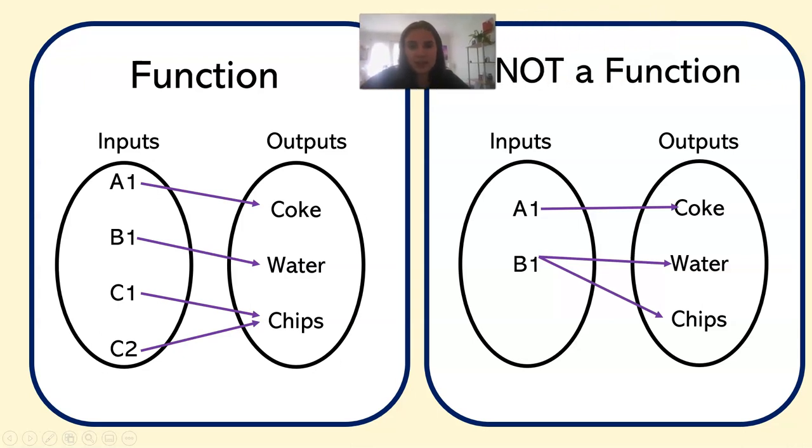So here is just the two types put together. Function, each input has one output. I have one arrow coming from each input. And the one on the right is not a function. I have two arrows coming from B1.